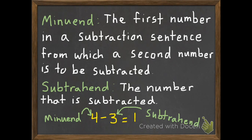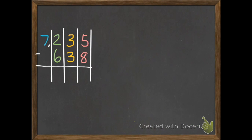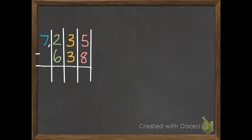So if I have my first example, 7,235 subtract 638, it's always important we keep things lined up with our ones, tens, hundreds, and thousands. We don't want to accidentally put our 600 under our 7,000 because that would give us the wrong answer.